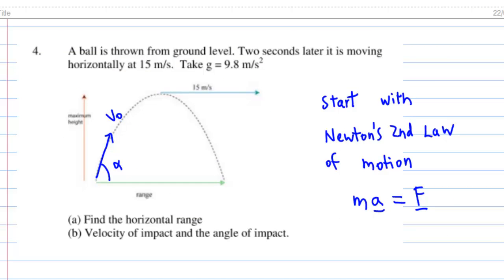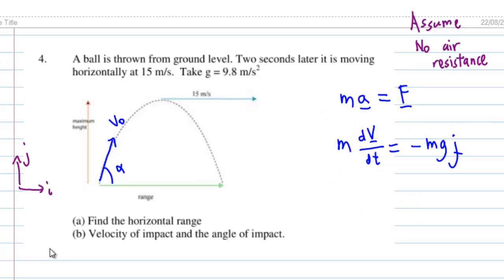To solve this problem, we start with Newton's second law of motion. Mass times acceleration equal to force. Ma equal to F. Setting up the i and j direction, assume there is no air resistance. Then the force is coming from gravity, which is negative mg j, and acceleration a is the rate of change of velocity, dV dt.